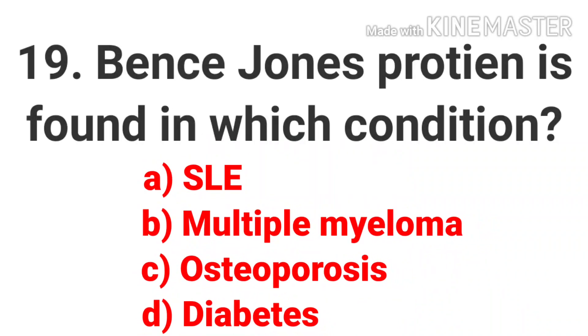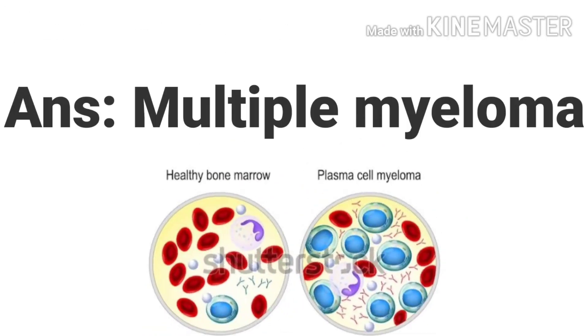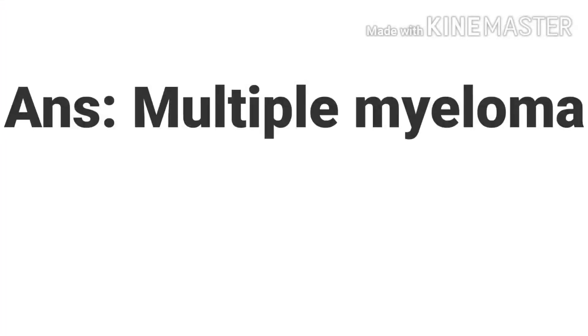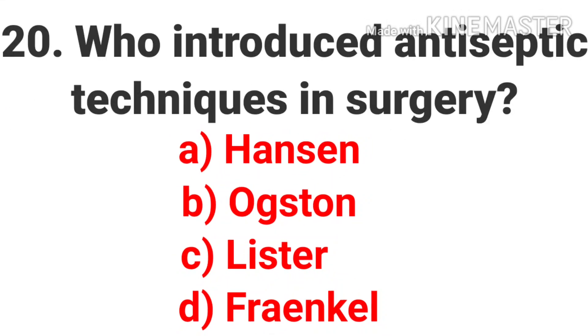The nineteenth question is: Bence-Jones protein is found in which condition? Options are SLE, Multiple myeloma, Osteoporosis, and Diabetes. The answer is Multiple myeloma. Multiple myeloma is a cancer of plasma cells. The Bence-Jones protein is a monoclonal globulin protein or immunoglobulin light chain found in the urine. Detection of Bence-Jones protein may be suggestive of multiple myeloma.